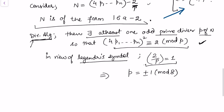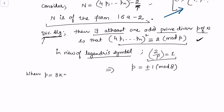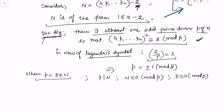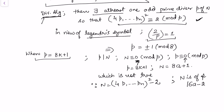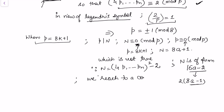The two possibilities are p of the form 8k+1 or p of the form 8k-1. If p is of the form 8k+1, then since p divides N, N ≡ 0 (mod p) and p ≡ 0 (mod p), which would require N to also be of the form 8a+1. But N is of the form 16a - 2, which is a contradiction.